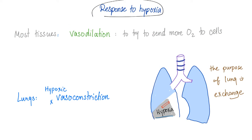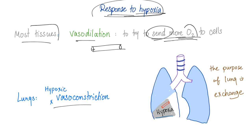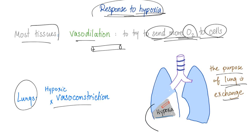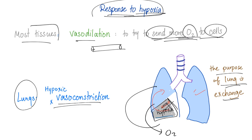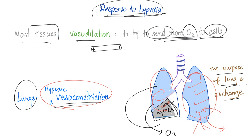Most tissues respond to hypoxia by vasodilation — which makes perfect sense. If you have hypoxia, dilate your vessels to send more oxygen to the cells. The lungs, however, are different. The main purpose of the lung is gas exchange — oxygen to blood, CO2 out. So if part of the lung is hypoxic, the lung vasoconstricts that bad area, forcing all the blood to the normal, functional spaces so they can exchange gas. This is called hypoxic vasoconstriction. When you vasoconstrict, the area decreases, pressure increases — hydrostatic pressure — you end up with pulmonary edema.